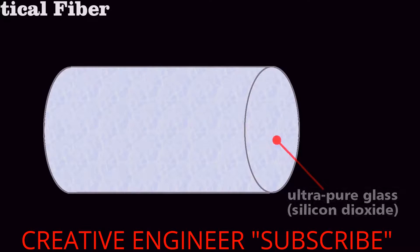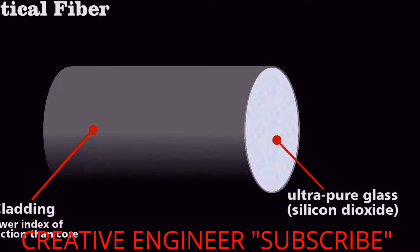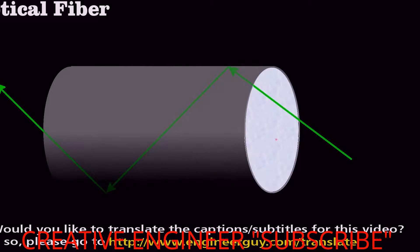engineers create a core of glass, usually pure silicon dioxide, and an outside layer called cladding, which they also typically make from silicon dioxide, but with bits of boron or germanium to decrease its index of refraction. A 1% difference is enough to make a fiber work.